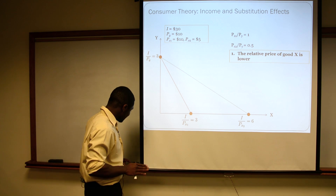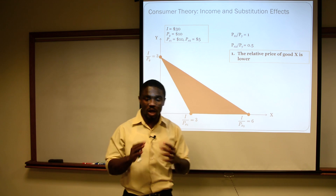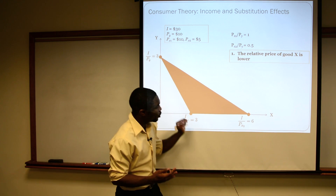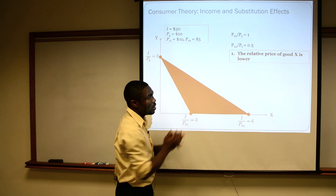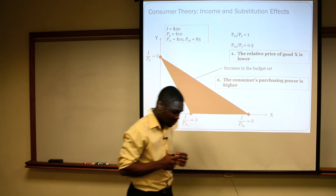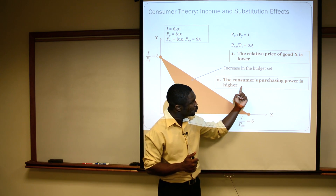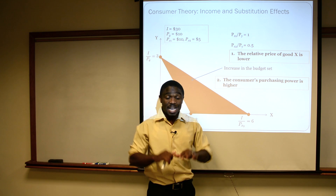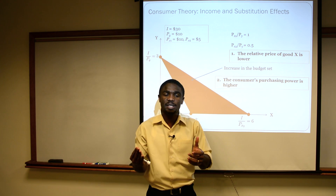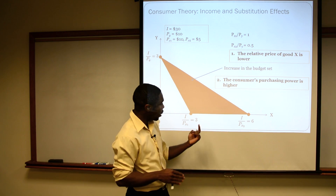But a second thing happens. Recognize here that all of the bundles that exist in this shaded region, originally we couldn't purchase. Everything to the left is what we could afford. But now that the price of good X has fallen, all of these bundles become available to us. We describe that as just an increase in our budget set. It's saying that there are more bundles we can buy, and that the consumer's purchasing power has increased — even though their income hasn't changed, by the fact that the price of at least one good that they buy has fallen, they're now in a sense better off.